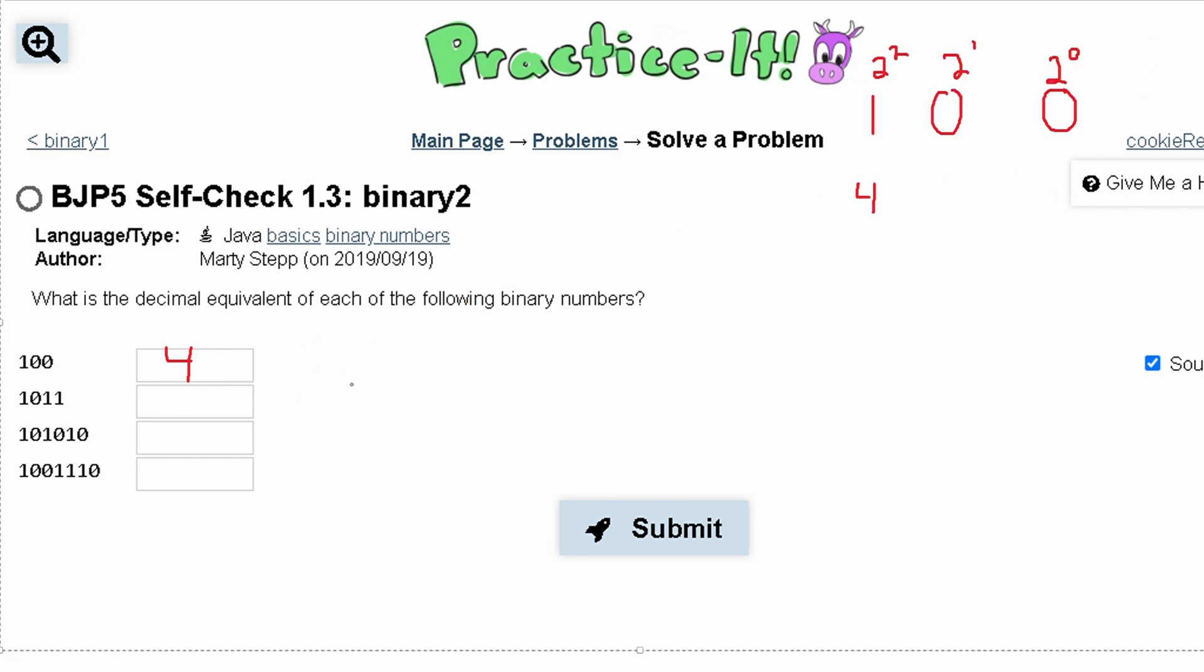Next we have the binary value 1 0 1 1. Again this is of base 2. So we have 2 to the 0th base here and then 2 to the 1st base here, 2 to the 2nd here, and then 2 to the 3rd here.